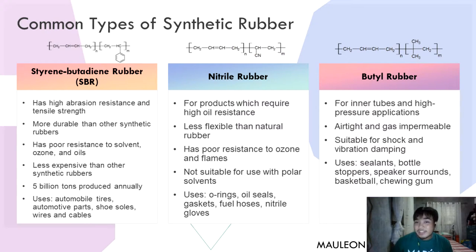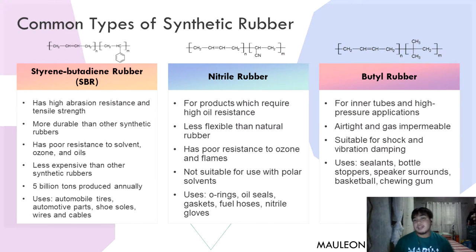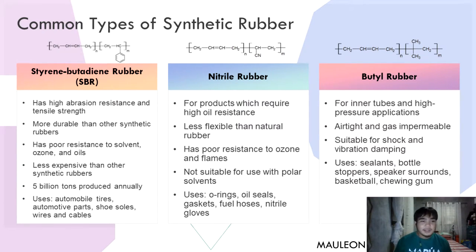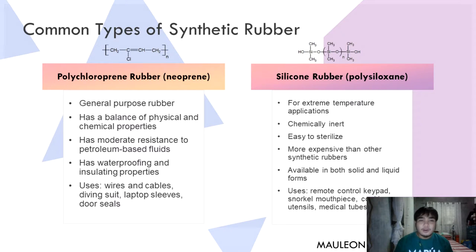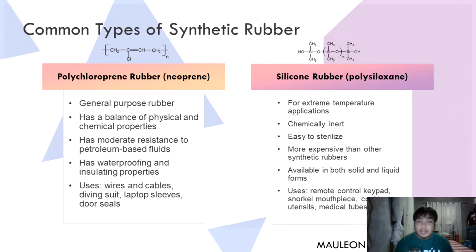Next is butyl rubber, commonly used for inner tubes and high-pressure applications. It is airtight and gas-impermeable, so it is useful where fluids — commonly gases — are involved. It is also suitable for shock and vibration damping, and is commonly used on sealants, bottle stoppers, speaker surrounds, basketballs, and chewing gum.